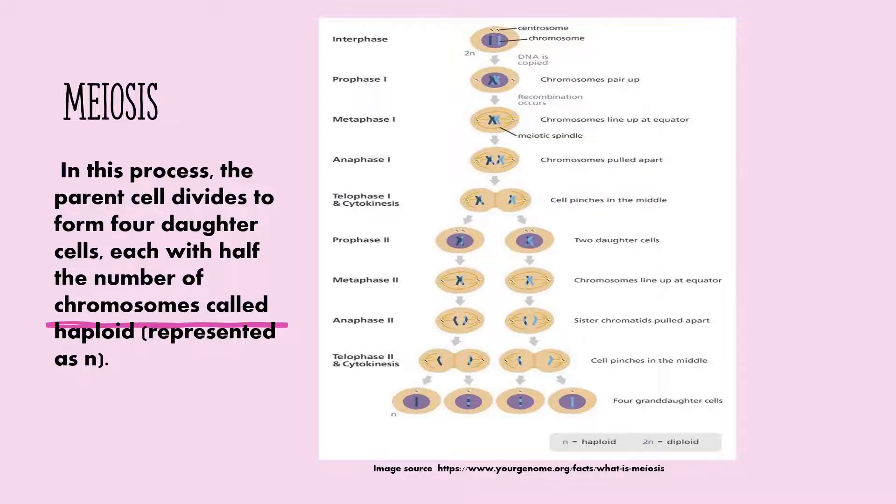The first part is called meiosis I. It reduces the number of chromosomes from diploid to haploid number, thus called reductional division. After interphase is prophase I, where homologous chromosomes pair up and exchange fragments in the process of crossing over. This is followed by metaphase I, where the homologous chromosomes line up at the equator. Then anaphase I, where the chromosomes pull apart. And then telophase I and cytokinesis, the cell pinches in the middle, resulting in two daughter cells which are haploid.